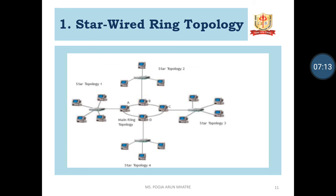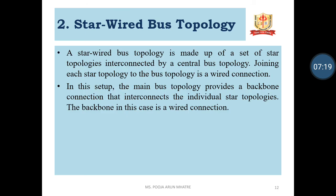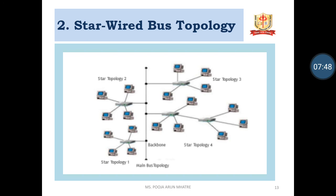The schematic diagram of a star wired ring topology is shown. Star Wired Bus Topology: A star wired bus topology is made up of a set of star topologies which are interconnected by a central bus topology. Joining each star topology to the bus topology is a wired connection. In this type of setup, the main bus topology provides a backbone connection that interconnects the individual star topologies. The backbone in this case is a wired connection. The figure shows the schematic of the star wired bus topology.